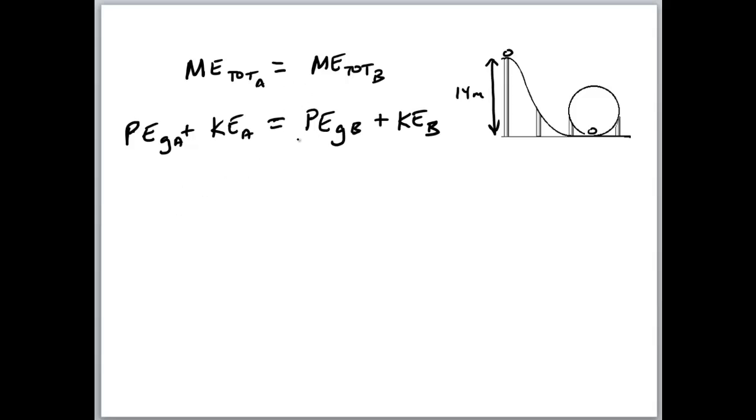Now what I always recommend is look for things that you know to be zero and what are they? There's two quantities that are zero here. Can you spot them? If we expand these quantities, for instance, mgh, one-half mv squared, mgh, one-half mv squared,